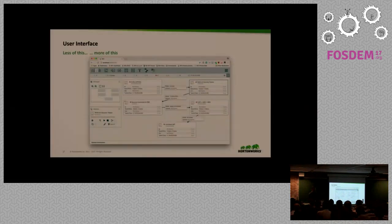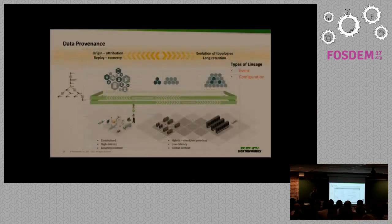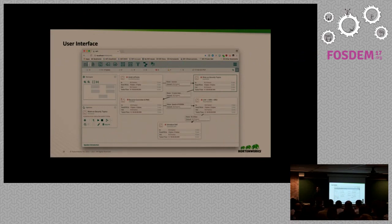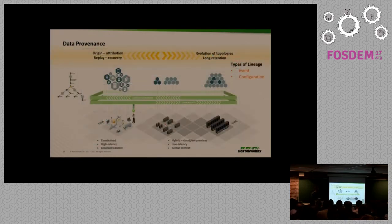Here we have what's called the navigation palette and the operation palette. Across the top header are components which you can drag onto the canvas. On the far right, the hamburger menu allows you to get into system maintenance and operations. On the graph itself you can see your components, connections, etc.